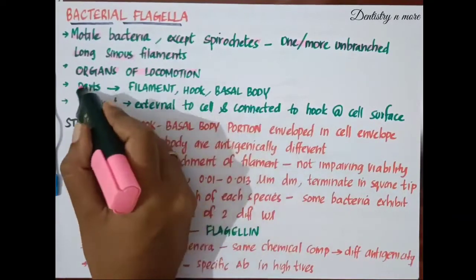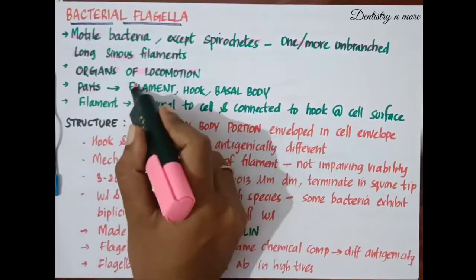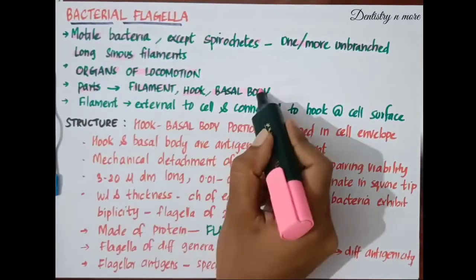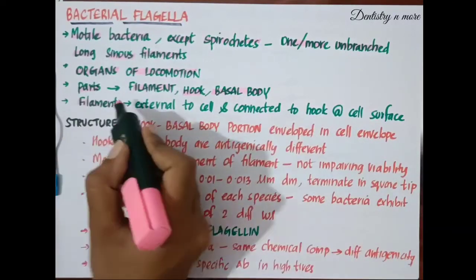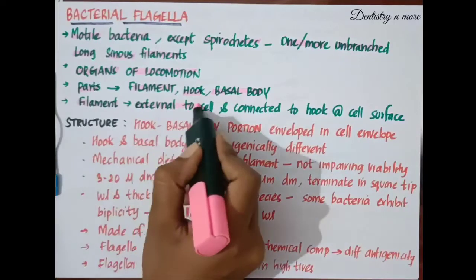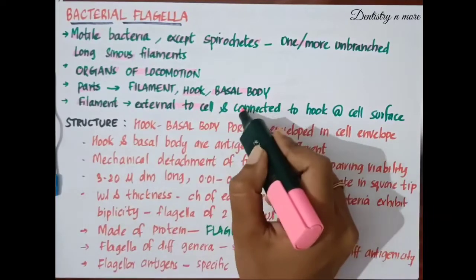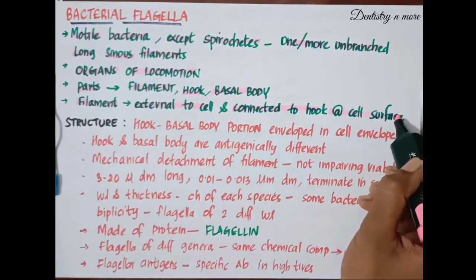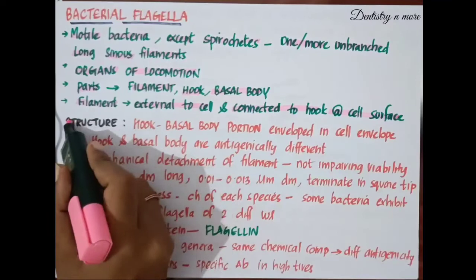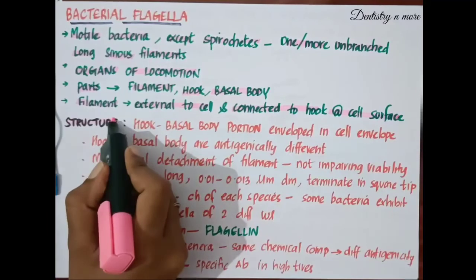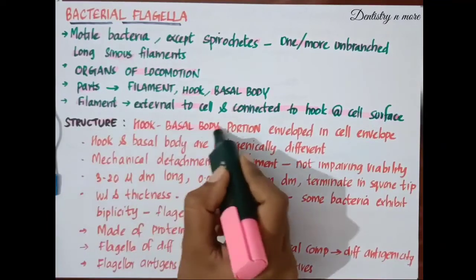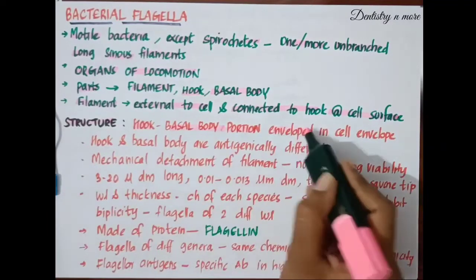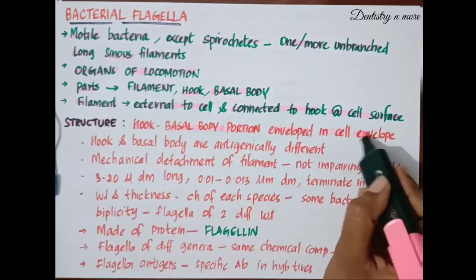It has three major parts: filament, hook, and basal body. The filament is present external to the cell and connected to the hook at the cell surface. Moving on to the structure of bacterial flagella, the hook-basal body portion is enveloped in the cell envelope.